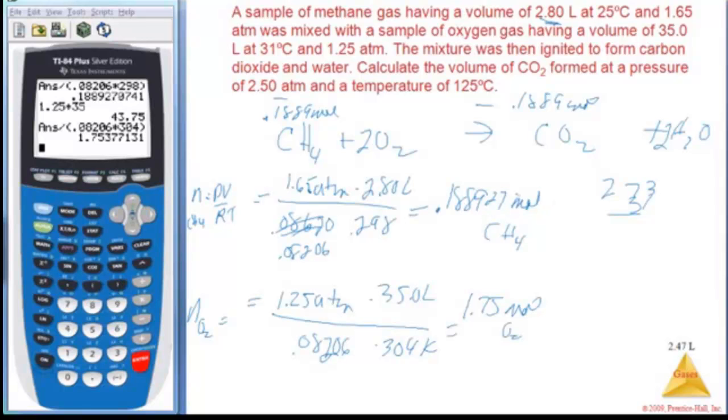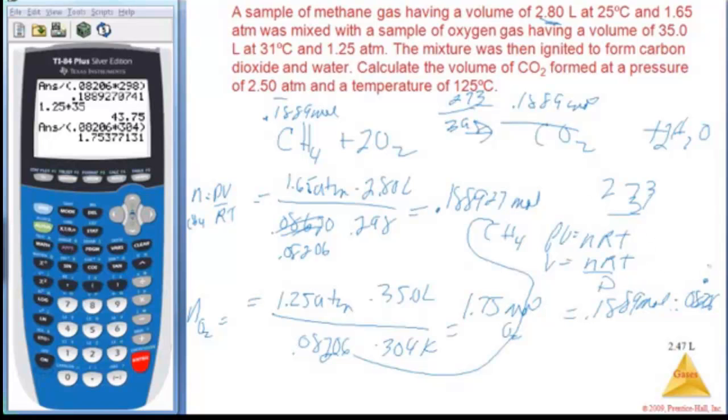So in this case, if I take my PV equals NRT, my volume is going to be NRT over P, and in this case, I know I should get this many moles, 0.1889 moles, times my R here, 0.08206, times my temperature, which is 125, so I add 273 to that, and I get 398, and my pressure there says 2.5 atm.